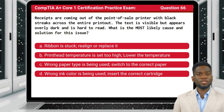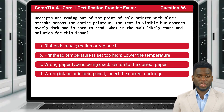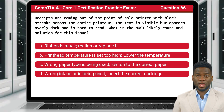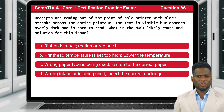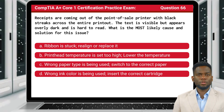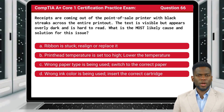Question 66. Receipts are coming out of the point-of-sale printer with black streaks across the entire printout. The text is visible but appears overly dark and is hard to read. What is the most likely cause of this issue?